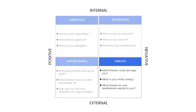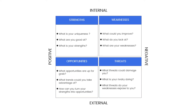Threats: List external factors that could be a threat or cause a problem to you or your business. Examples of threats could include rising unemployment, increasing competition, higher interest rates, and the uncertainty of global markets. When you are making your list, be precise and prioritize so the most important points are at the top.